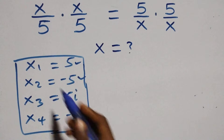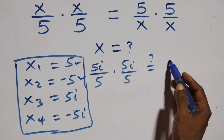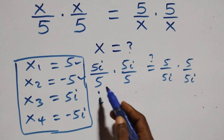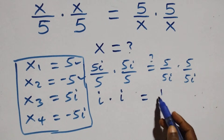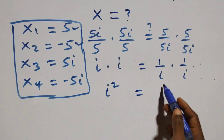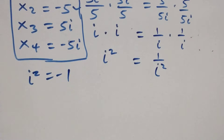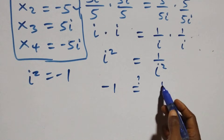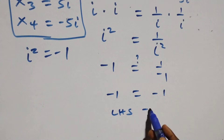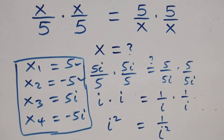Substituting x equals 5i: the equation becomes (5i/5)(5i/5) equals (5/5i)(5/5i), which simplifies to i times i equals (1/i)(1/i). That is i squared equals 1/i squared. We note that i squared equals minus 1, so we have minus 1 equals 1 over minus 1, which is minus 1. Left hand side equals right hand side, so x equals 5i also satisfies the given problem.